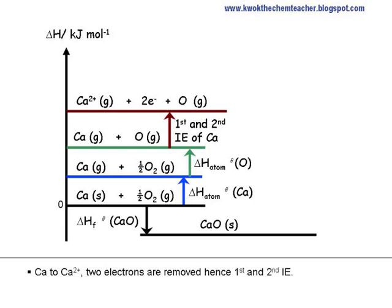Calcium to calcium 2+ requires removing two electrons, hence the first and second ionization energy. The two electrons removed from calcium to form Ca²⁺ must be shown.